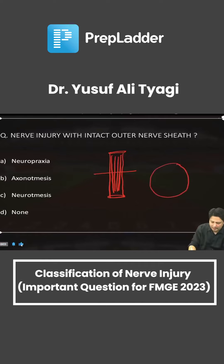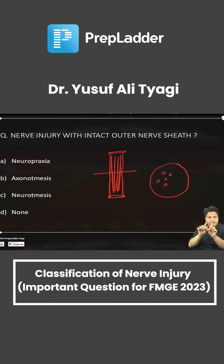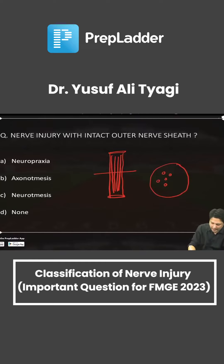For example, if this is a single axon, this is another axon, this is another — these are multiple axons. Now, each axon has its own fibrous covering, and that fibrous covering is known by the name of endoneurium.